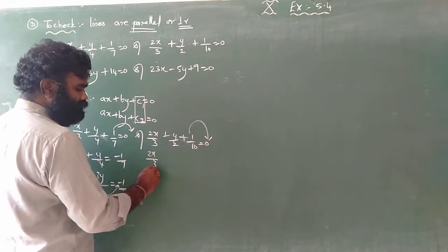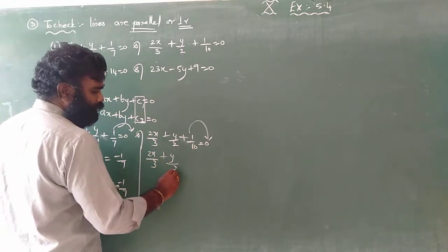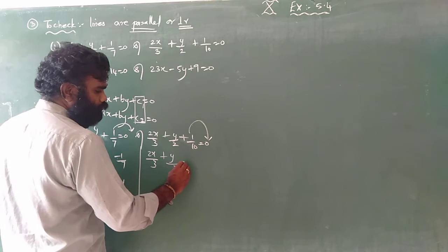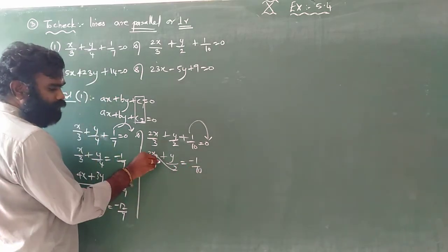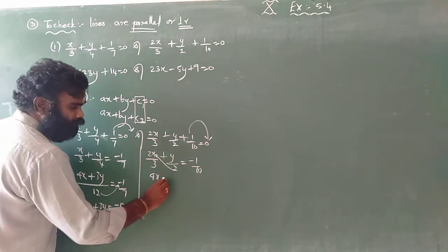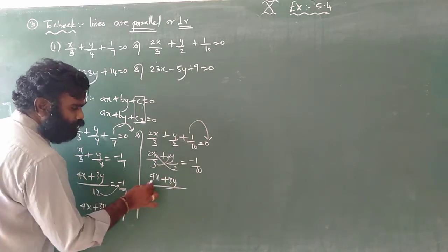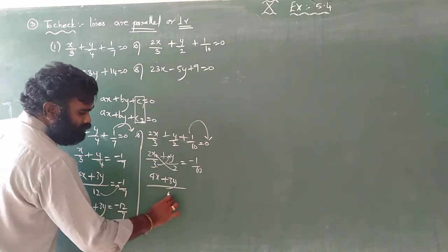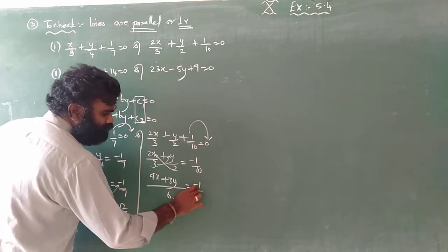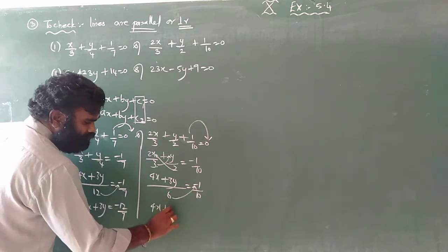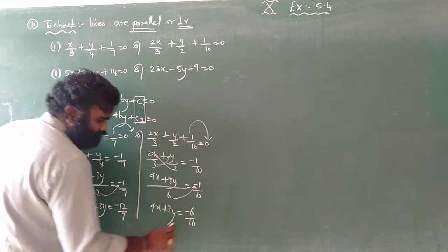For the second equation, move the constant: 2x by 3 plus y by 2 is equal to minus 1 by 10. Cross multiply: 2 times 2 gives 4x, 3 times y gives 3y, and 3 times 2 is 6. So 4x plus 3y is equal to minus 6 by 10.